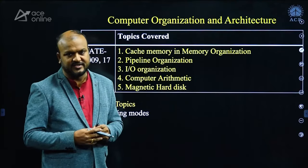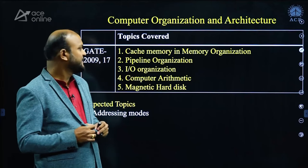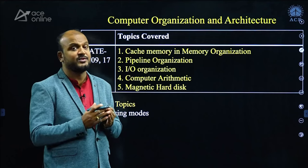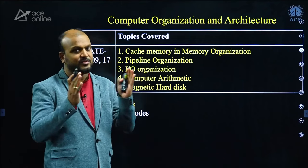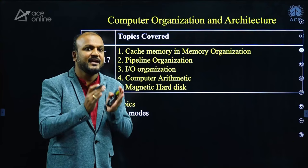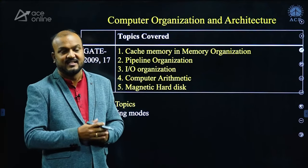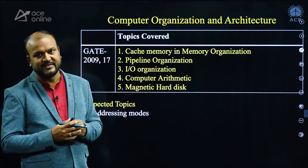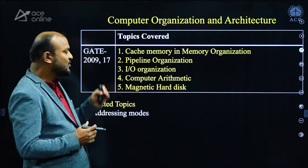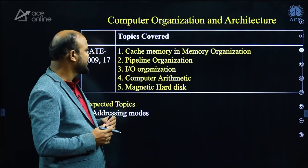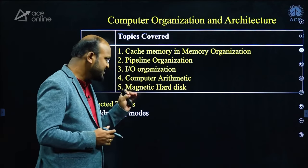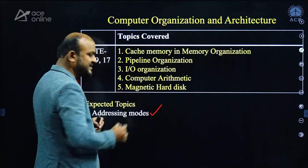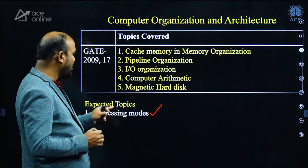Computer Organization is a challenging but important subject. Many students skip its questions, but you should not, because it plays an important role in your GATE rank. In the 2009 and 2017 papers, questions were asked on cache memory, memory organization, pipeline organization, I/O organization, computer arithmetic, and magnetic hard disks. The most expected topic this year is addressing modes.